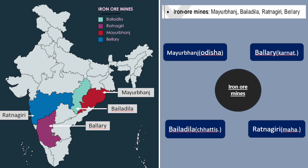First are iron ore mines. The major mines are Mayurbhanj, Baladila, Ratnagiri and Ballari. Mayurbhanj is located in Odisha — this is the major iron ore producing mine. Ratnagiri is in Maharashtra, Baladila is in Chhattisgarh and Ballari is in Karnataka. So these are the four iron ore mines.